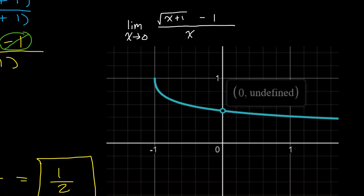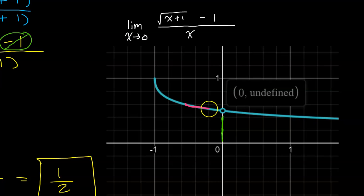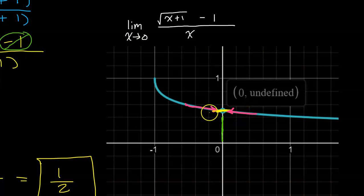Let's take a quick look at the graph. We were finding the limit as x approaches 0, and we can see there is a hole at x equals 0. As x values approach 0 from the left and right, we look at what y value the function approaches. We can see the y value being approached is 1 half, which is exactly what we got analytically.